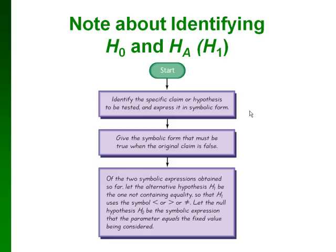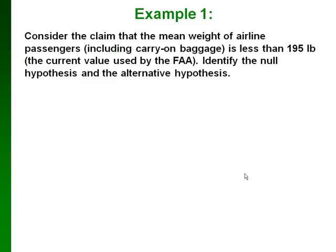Here are the steps to identify hypotheses from a claim. First, figure out exactly what is being claimed and write it in symbolic form as an inequality. Then consider the opposite: if the original claim were false, what would be the true statement? The alternative hypothesis is the expression without an equal sign — it has less than, greater than, or not equal to. The null hypothesis uses the same value but with an equal sign. This is a little hard to explain, so we're going to do an example.